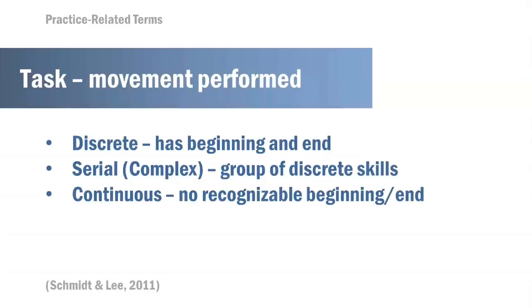As we consider the skills themselves, we have discrete skills with a clear beginning and end such as sitting to standing, more complex skills, and then continuous skills which would be walking. Walking is considered a continuous skill.